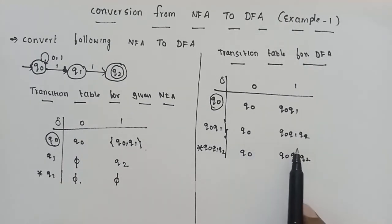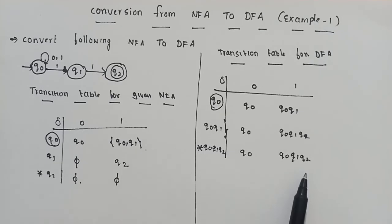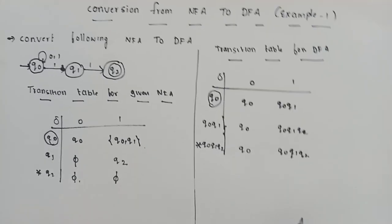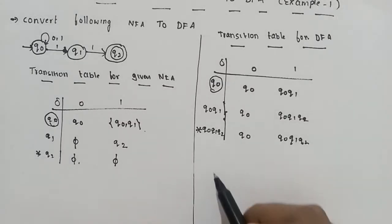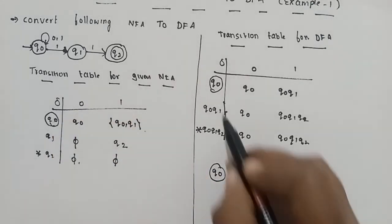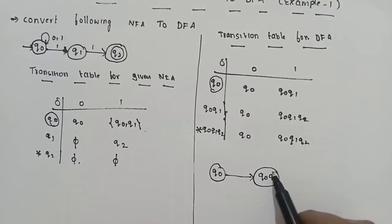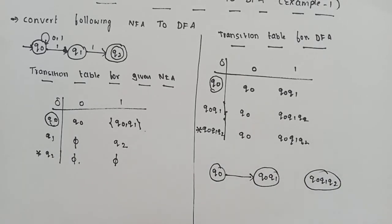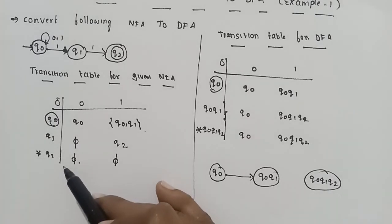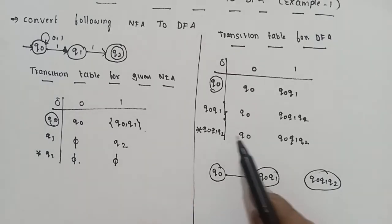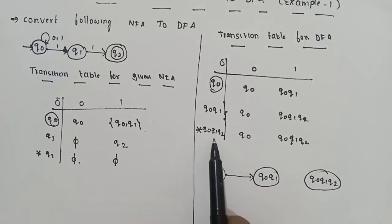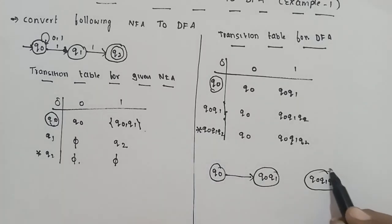Q0 is already expanded. {Q0, Q1, Q2} is also expanded. Any state containing Q2 is a final state in the DFA. So {Q0, Q1, Q2} is marked as a final state. Only the combined state {Q0, Q1, Q2} will appear as a final state in the constructed DFA.